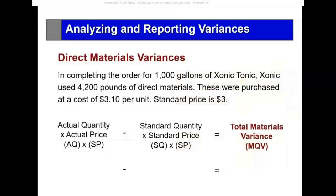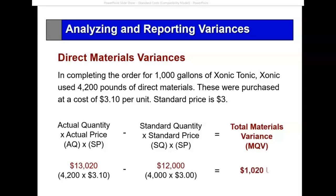Let's look at material — we look at each element individually. Keep in mind that the variance is a function of two things: the amount I used (the quantity variance) and the amount I paid (the price variance). For direct material variance on 1,000 gallons, I used 4,200 pounds and paid $3.10 per unit. So actual quantity times actual price is $13,020; standard is $12,000. The total direct material variance is $1,020 unfavorable.